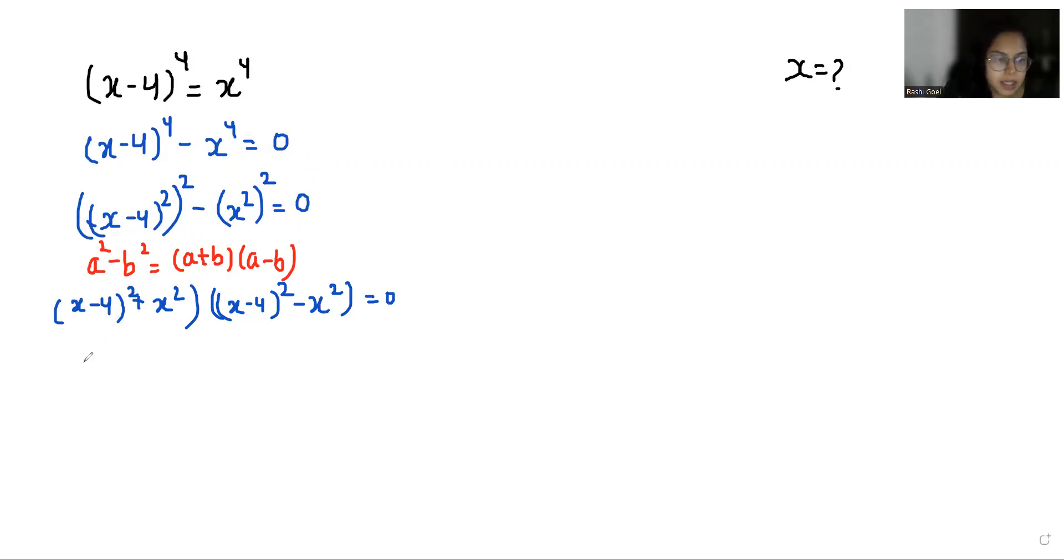So x² plus 4² which is 16 minus 8x plus x². And here x² plus 16 minus 8x minus x².